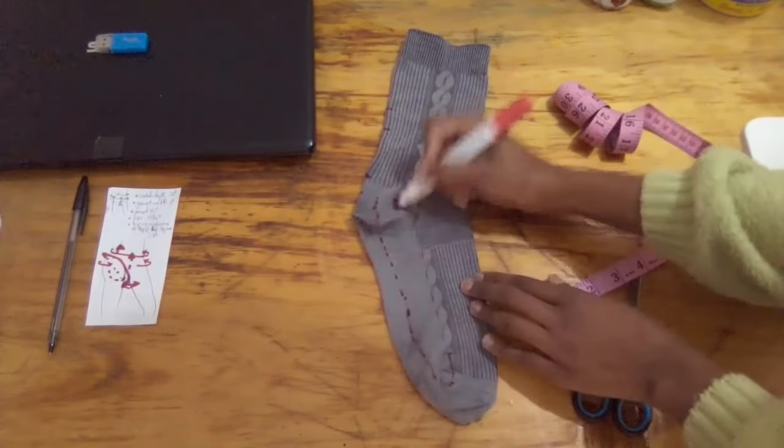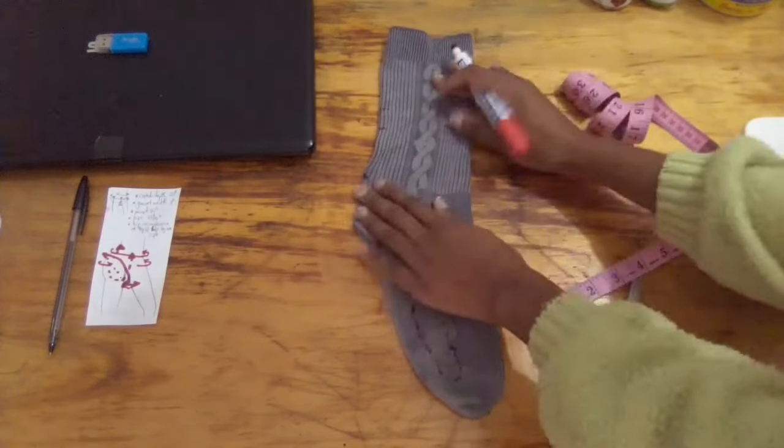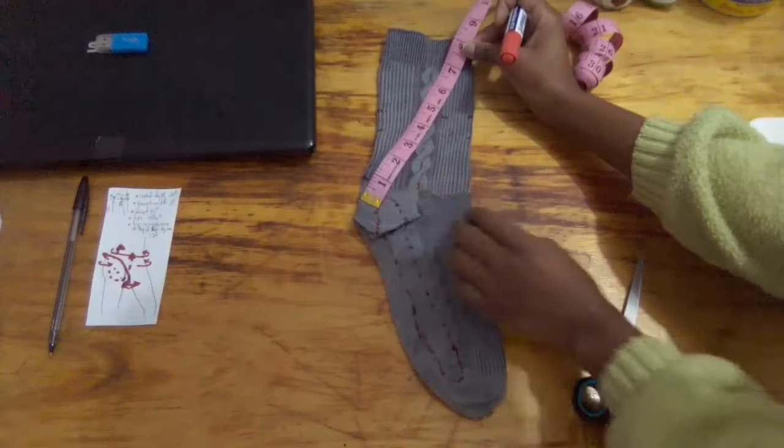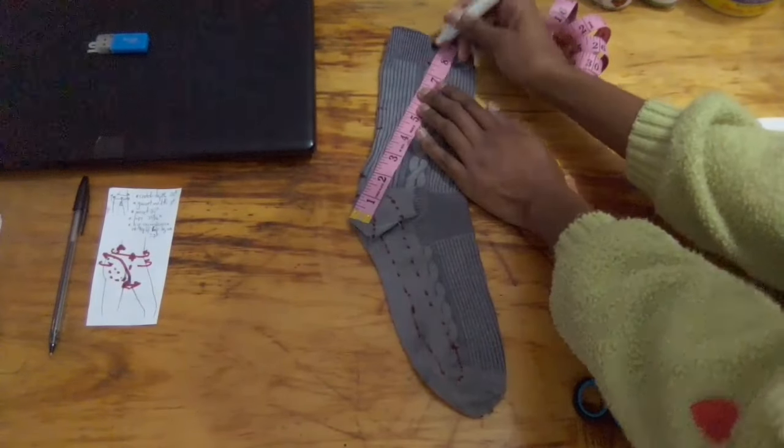The waist should be about 15 and a half inches. I'm hoping whatever is left of the sock will be enough for a waistband.